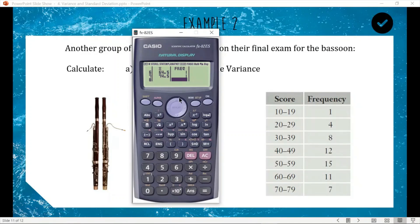We'll go across. We'll do our frequencies. So we've got one, four, eight, twelve, fifteen, eleven, and seven. All right. That's the most annoying part. Now that that's done, we can AC, clear the screen, but the data is still locked away inside the little computer.